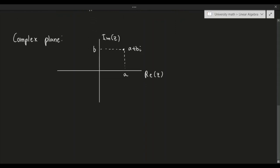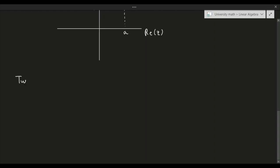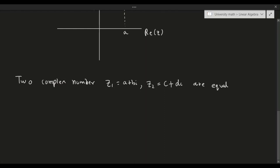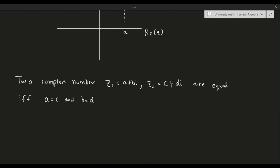As an important note, two complex numbers are equal if and only if their components are equal to each other. So if z₁ = a + bi and z₂ = c + di, they are equal if and only if a = c and b = d. This is fairly obvious, but the point is important.